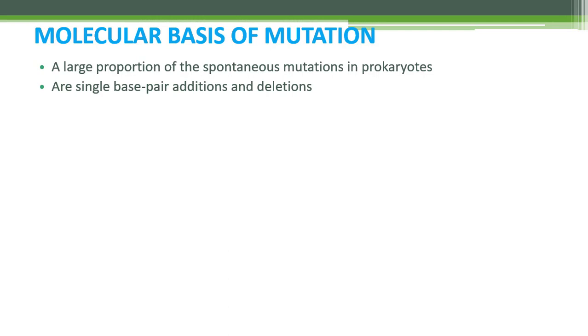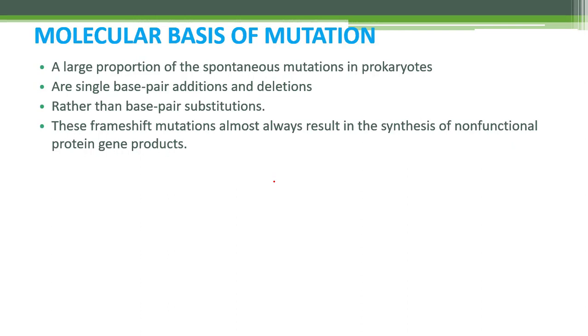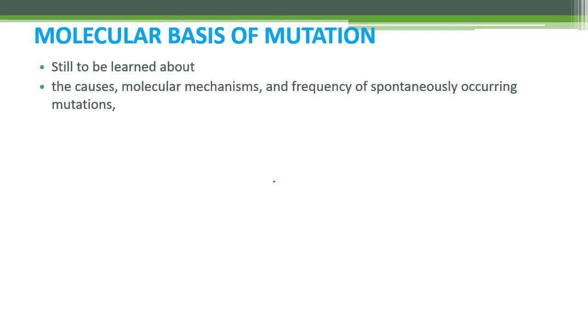Especially in prokaryotes, particularly bacteria, the spontaneous mutations that occur are mostly single base pair additions or deletions, instead of substitutions. These additions or deletions cause a frameshift effect, and as we saw in the previous video, the protein produced becomes totally non-functional because the entire amino acid sequence changes.